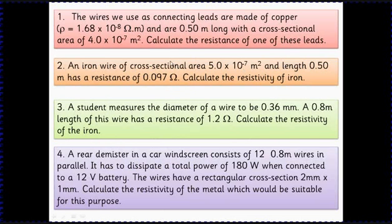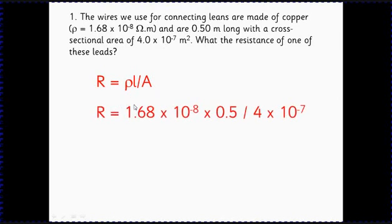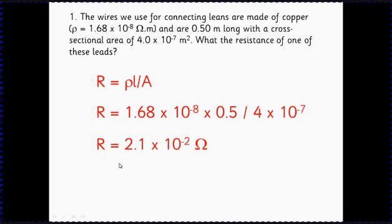Let's apply this formula. In this first example we're working out the resistance of some copper leads. We've got the resistivity of copper, the length, and the cross-sectional area, so we just put in the numbers: resistivity 1.68 times 10 to the minus 8 ohm metres, times 0.5 metres length, divided by 4 times 10 to the minus 7 square metres cross-sectional area. Careful with the calculator and you should find that comes to 2.1 times 10 to the minus 2 ohms.